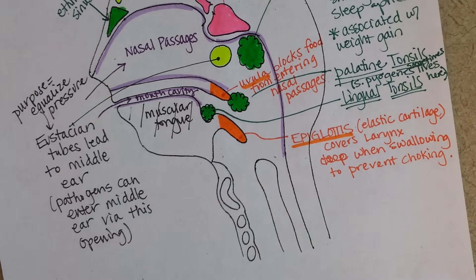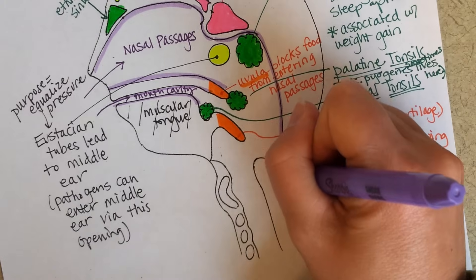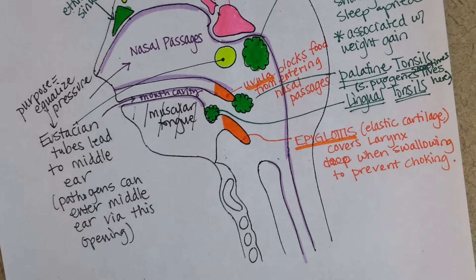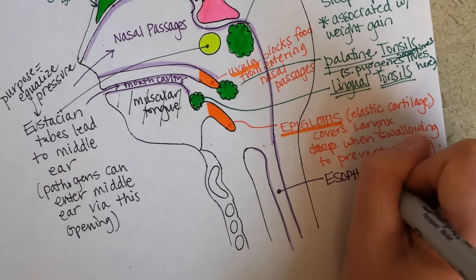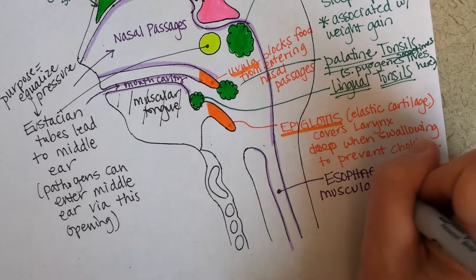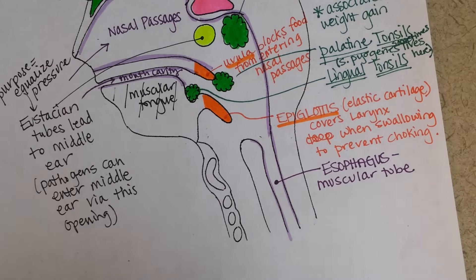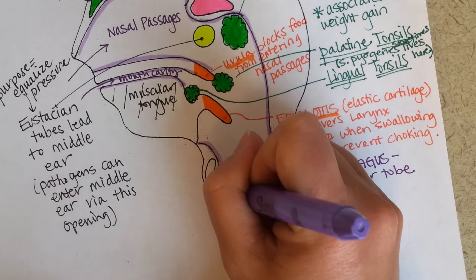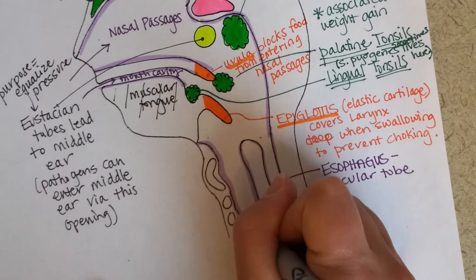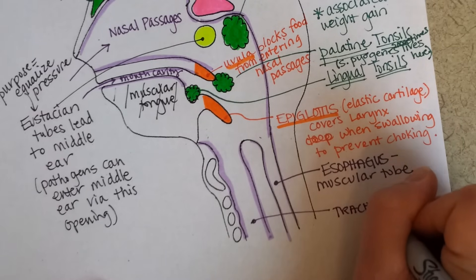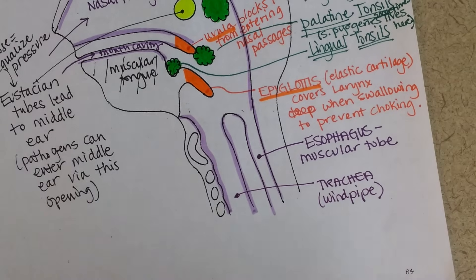You can see the esophagus here — the continued opening for food. This is the esophagus; it's a muscular tube. Notice it's at the back, and then the tube opening in the front is the trachea, also known as the windpipe.